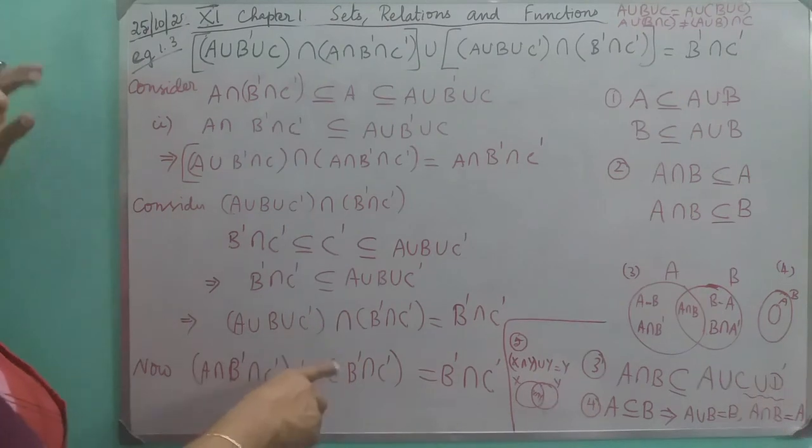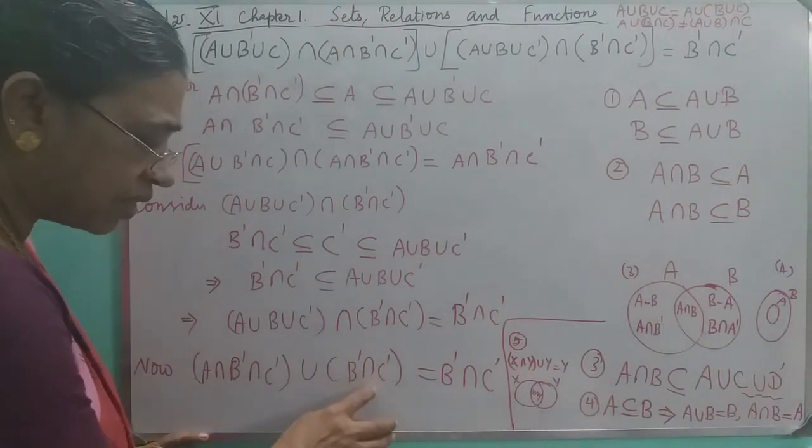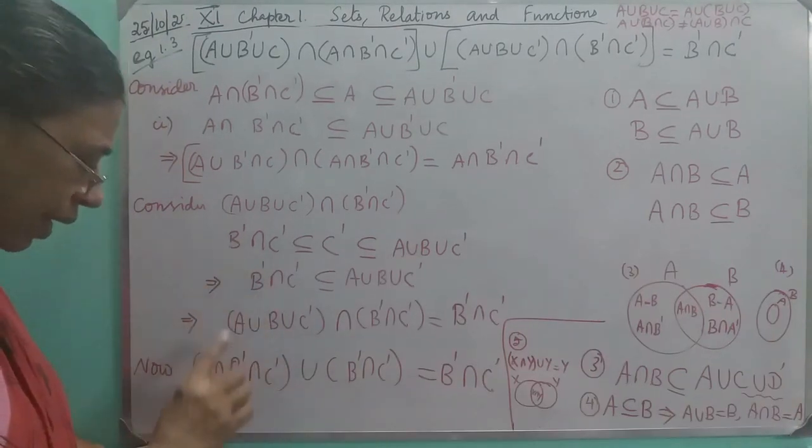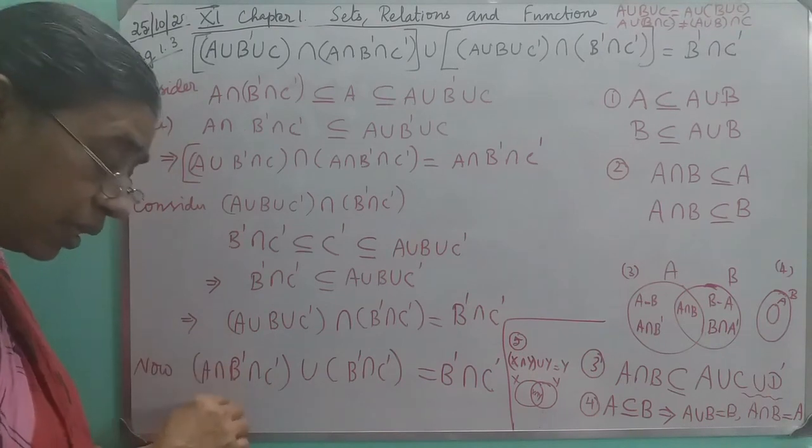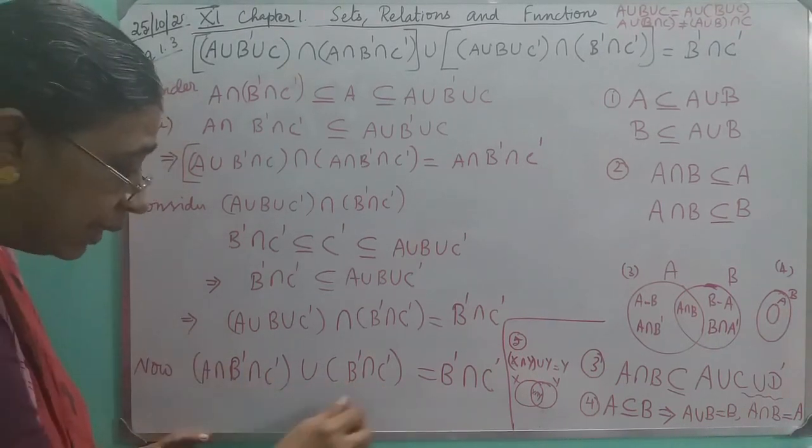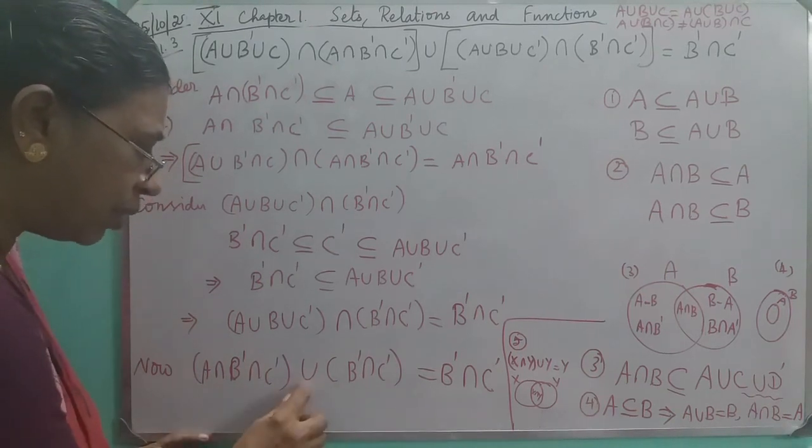I will give you 3-0. Then, what is the difference? This is 2-0. This is B intersection C. If you say B intersection C, if you say A, this is a tree. This is a tree. This tree is a tree. Okay?